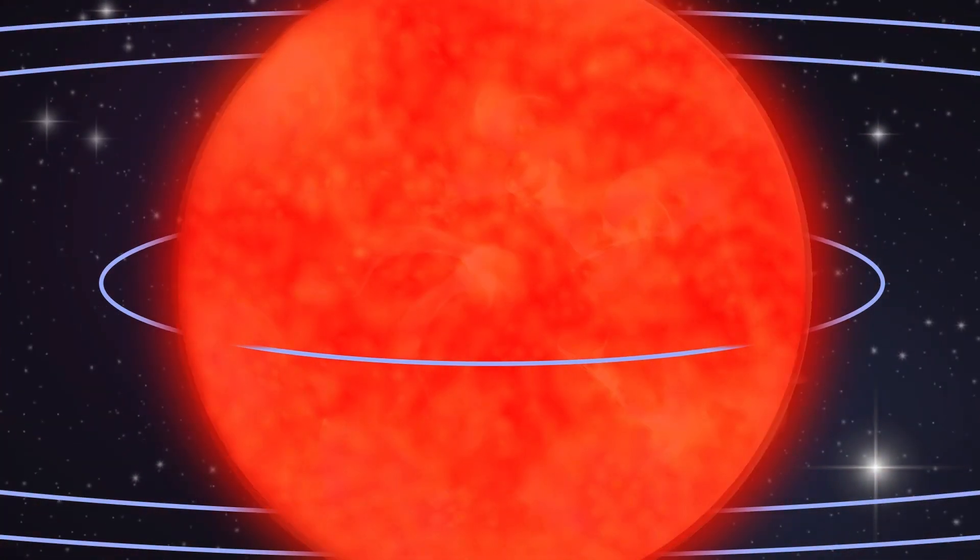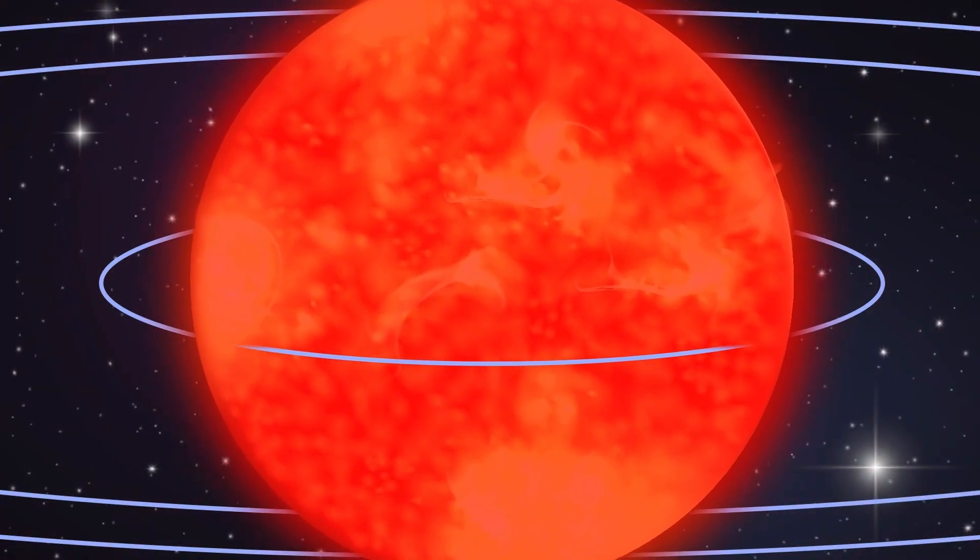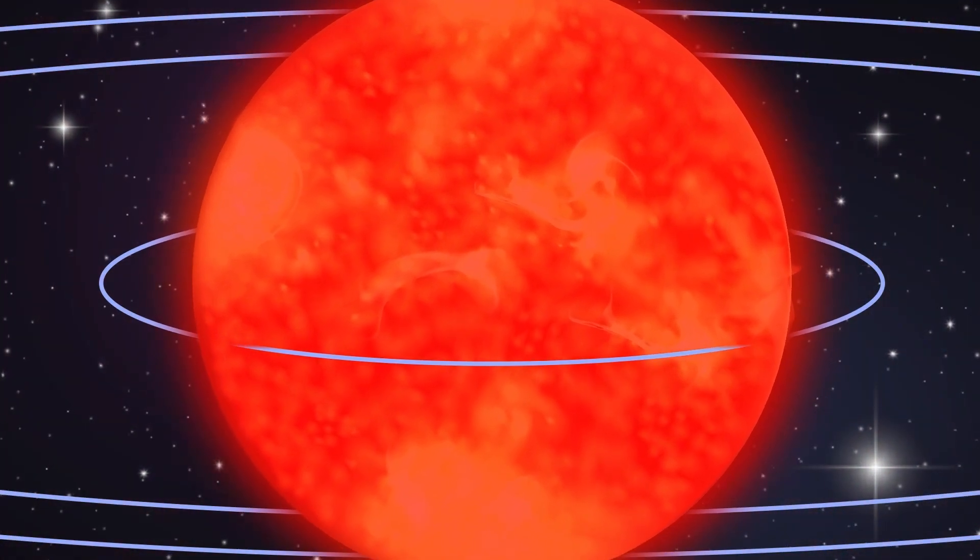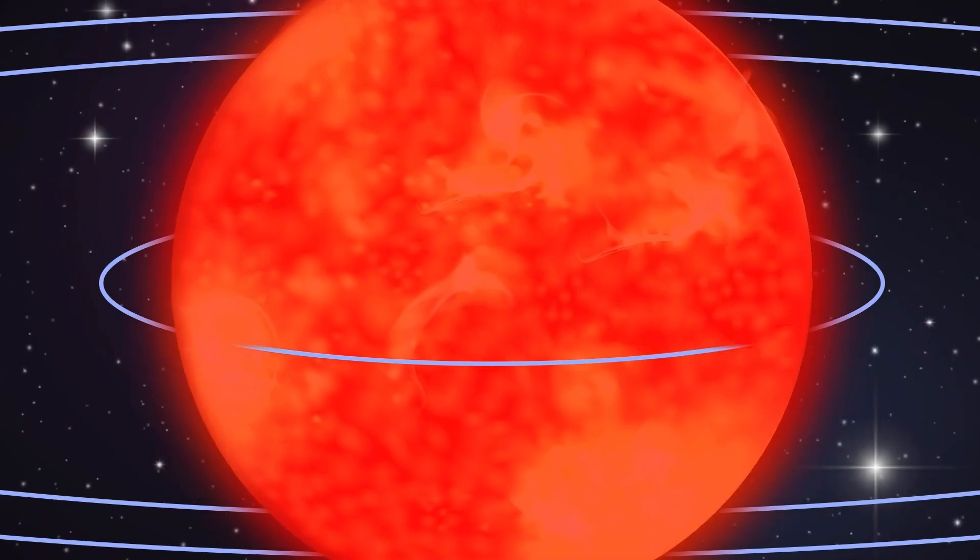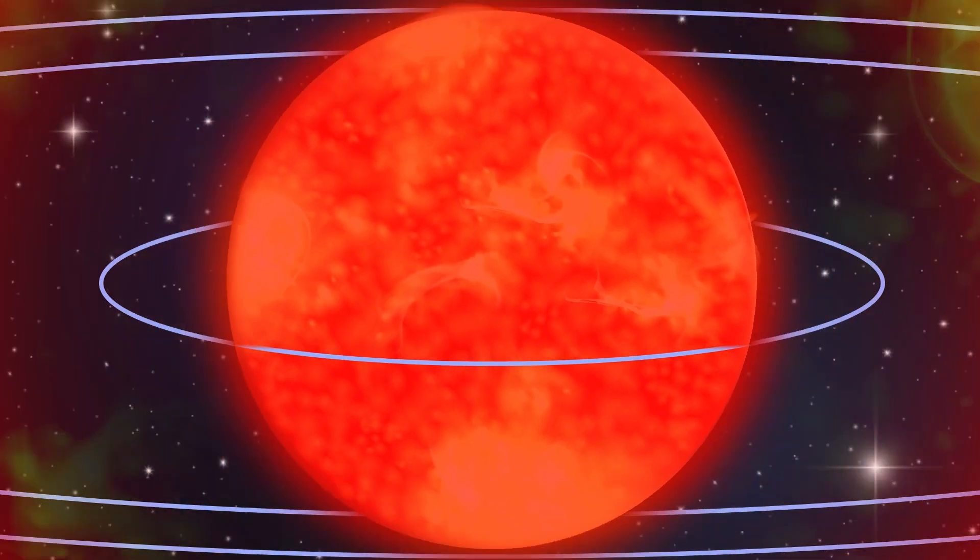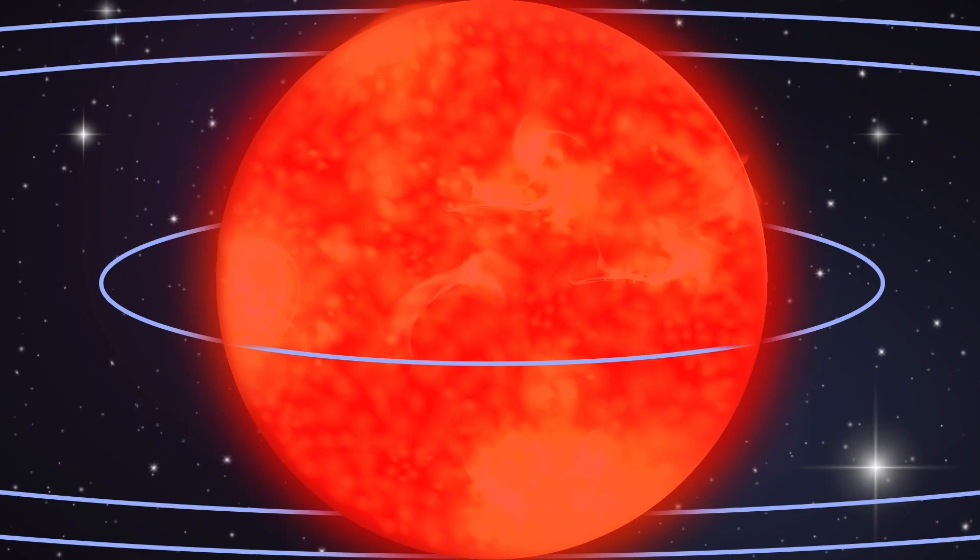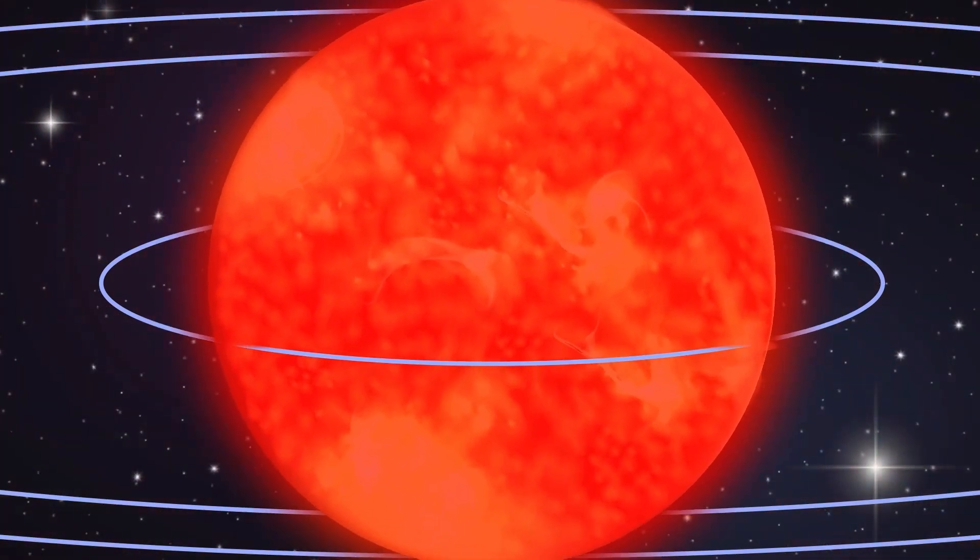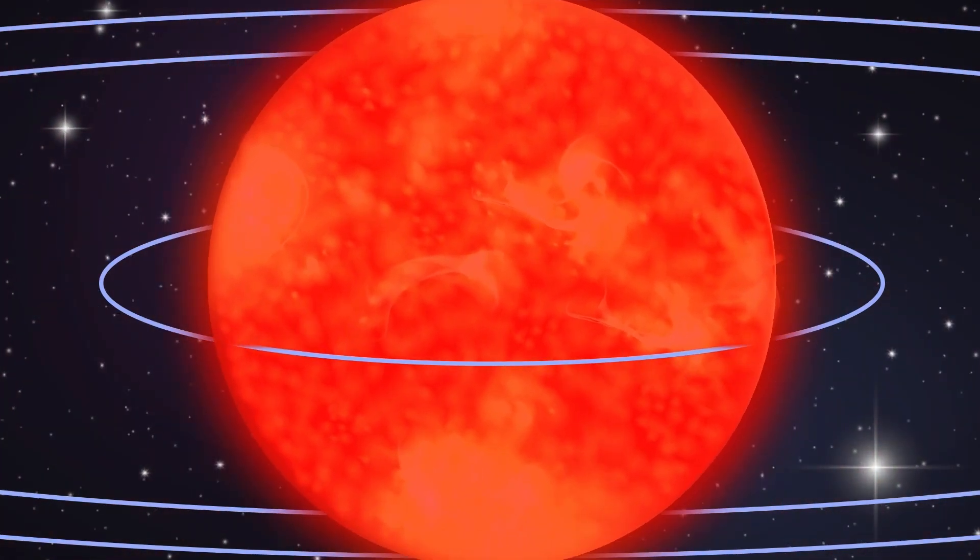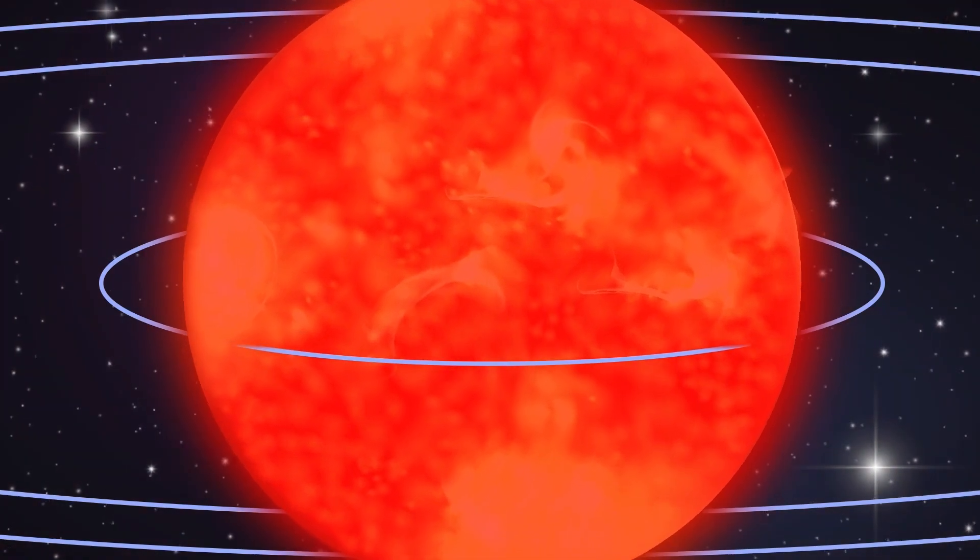Helium fuses into carbon and oxygen, releasing energy that pushes the star's outer layers to expand. It's a cosmic dance of change and growth, of energy and matter. The red giant phase illustrates the star's struggle for survival. But this is only a temporary reprieve.